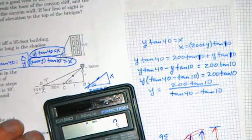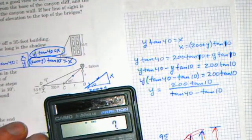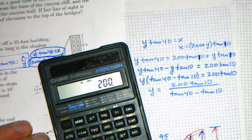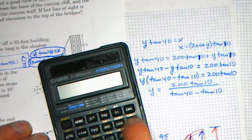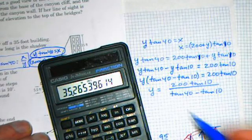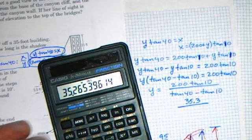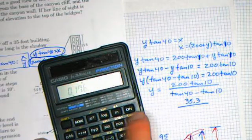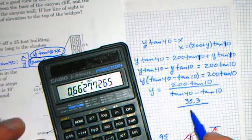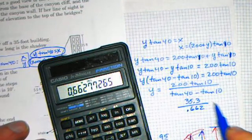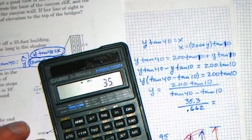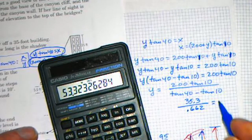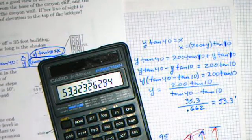I would expect a number possibly in the hundreds out of that. Let me clear the calculator. So 200 times tan 10 comes out to be 35.3. And we're dividing by tan 40 minus tan 10. So tan 40 take away tangent 10 comes out to be 0.662. So 35.3 divided by 0.662 comes out to be 53.3. And this is in feet. So y is 53.3 feet.